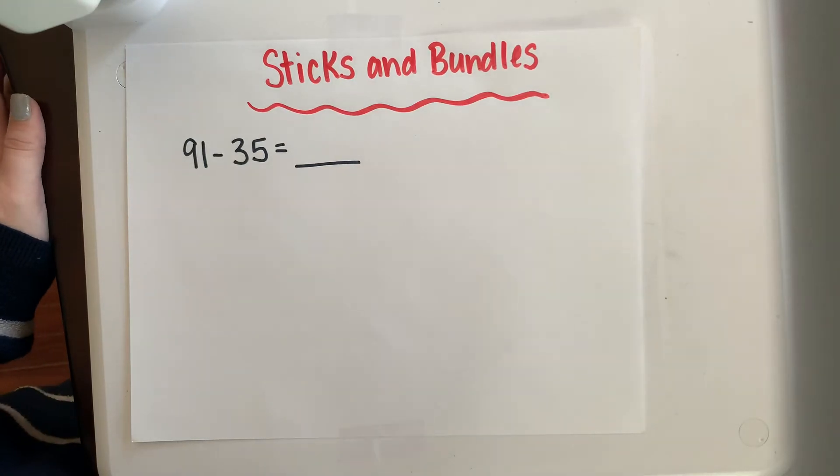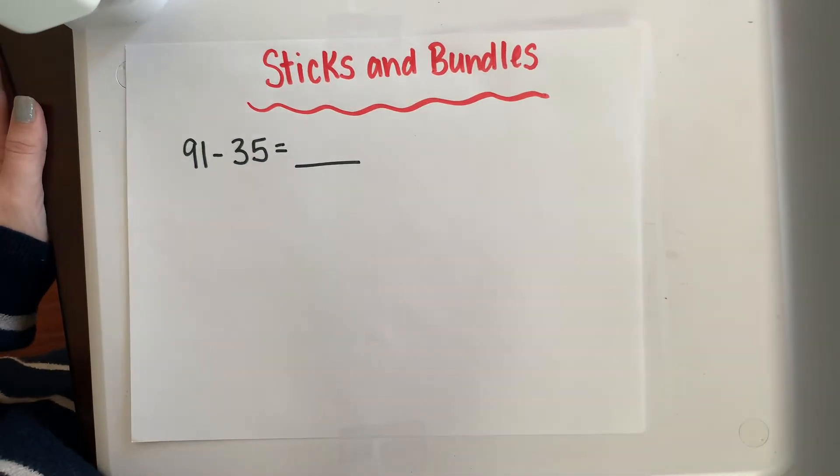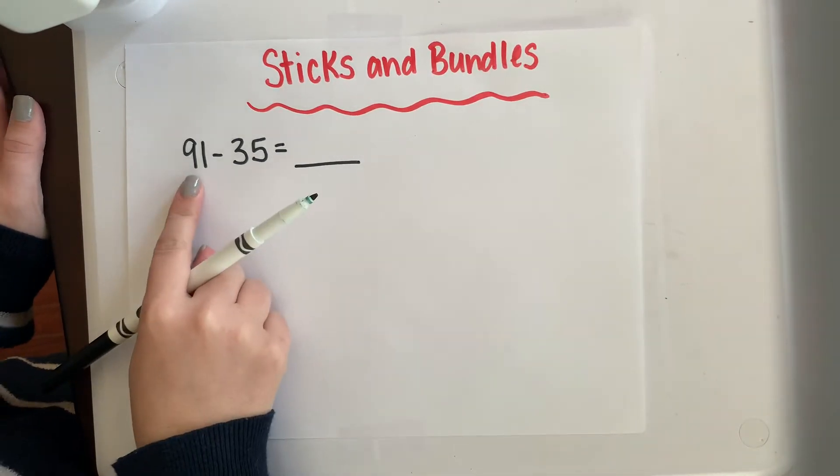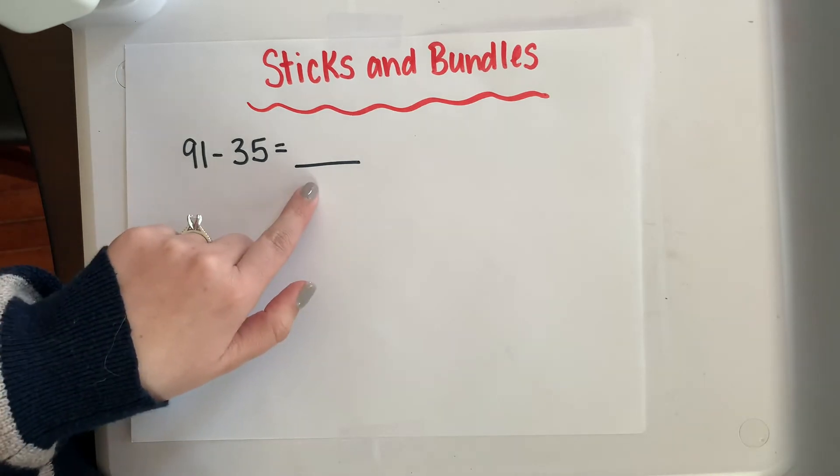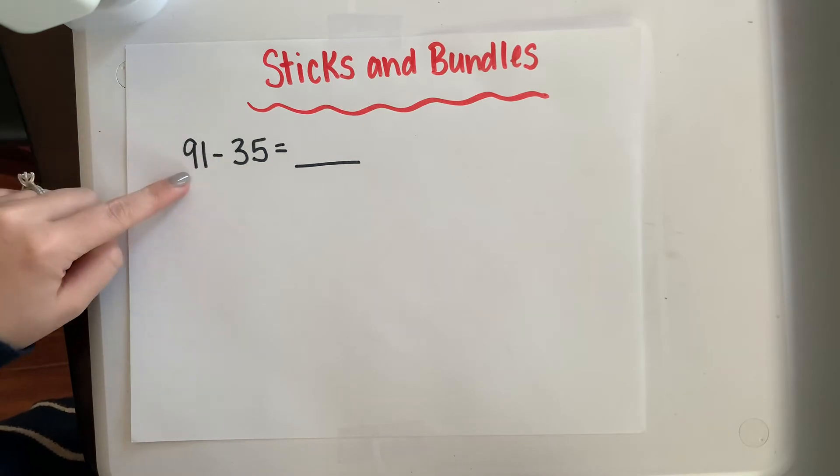Another way that we have learned to do subtraction so far in second grade is with sticks and bundles. So I'm going to use the same equation as before: 91 minus 35 equals something we don't know. When we're subtracting, we always start with the biggest number, so I'm going to go ahead and draw 91.